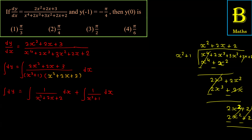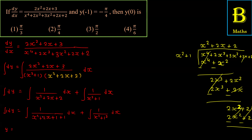पहले part को simplify करेंगे: 1/(x² + 2x + 2) = 1/((x+1)² + 1²)। यह standard formula बनती है ∫ 1/(x² + a²) dx। दूसरा part ∫ 1/(x² + 1) dx भी same formula से है। दोनों के लिए formula है ∫ 1/(u² + a²) du = (1/a) tan⁻¹(u/a)।